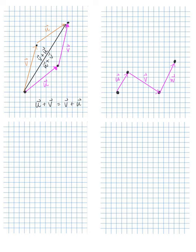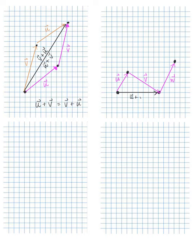Now let's look at the associative property. Here I've already drawn vectors U, V, and W. Let's first add U plus V — that's this vector pointing upward and this vector here. They're moving in the same direction, so starting from the initial point of the first vector and ending at the terminal of the second vector gives us U plus V.